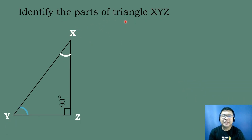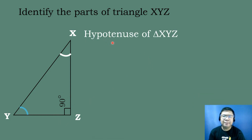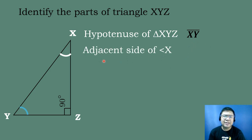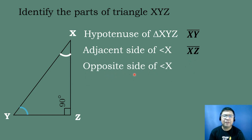Let's have this example: identify the parts of right triangle XYZ. The given right angle is angle Z, which is equal to 90 degrees. The opposite side of the right angle is segment XY, so segment XY is the hypotenuse. If the given angle is angle X, the side in between angle X and the right angle is the adjacent side, which is segment XZ. The opposite side of angle X is segment YZ.